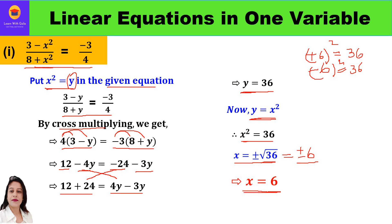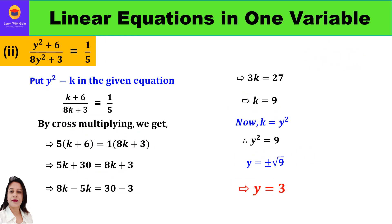The second question is: (y² + 6) / (8y² + 3) = 1/5. Again, y is raised to power 2, so it's a quadratic equation which we need to convert into a linear equation. We put y² = k in the given equation, giving us the linear equation: (k + 6) / (8k + 3) = 1/5. Wherever y² appeared, we have replaced it with k.